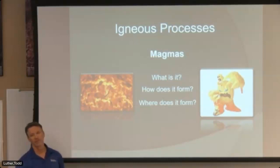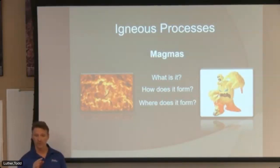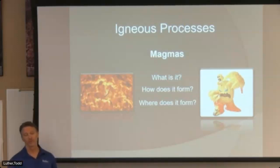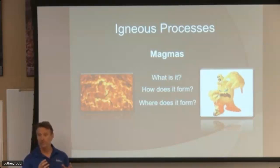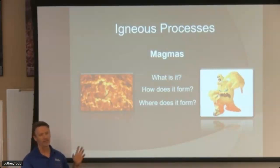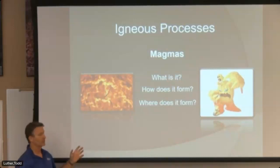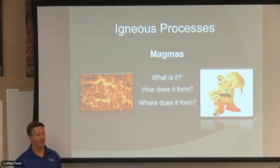The next PowerPoint will talk about igneous rocks in general - their different textures, compositions, and where they form. Rocks can cool inside the earth without making it to the surface; we call those plutonic or intrusive igneous rocks. They can also make it to the surface as lava flows or volcanoes; we call those volcanic or extrusive igneous rocks. This first PowerPoint focuses on how and where we get magma in the first place.